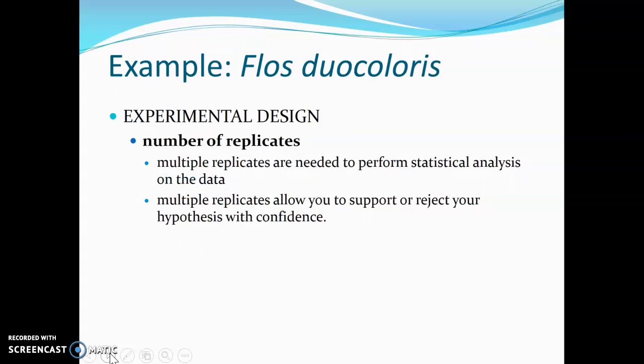We also need to think about the number of replicates, which in this case would mean the number of plants you have at each pH. You don't want to have just one plant at high pH and one plant at low pH, because there could be natural variation in color in these plants and you might just happen to get a pink one at high pH and a blue one at low pH. If you planted a whole bunch of them, you'd see that that wasn't true. So we need to have as many replicates as we can so that we can perform statistical analysis on our data. Those multiple replicates will better help us to support or reject our hypothesis with some confidence.